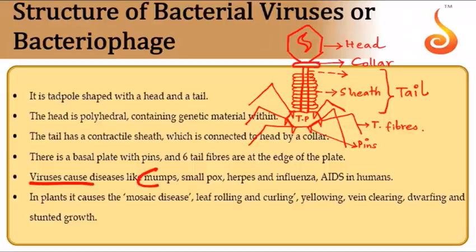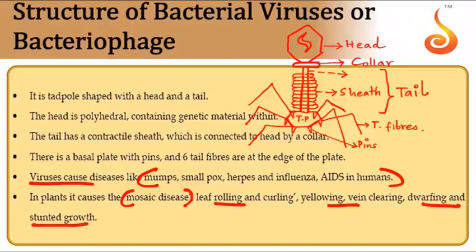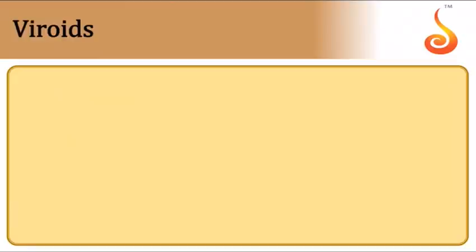Viruses cause many deadly diseases in humans, including the ongoing coronavirus. In plants they cause mosaic disease, and symptoms include reflowing, curling, yellowing, dwarfing, and stunted growth.